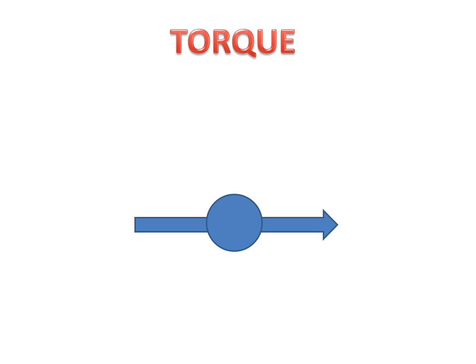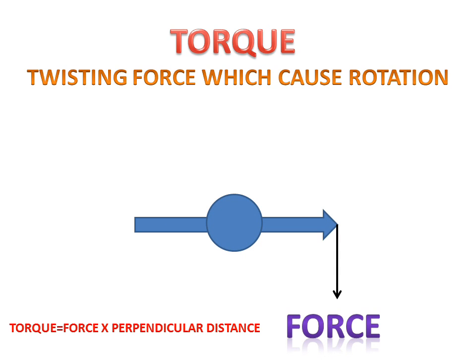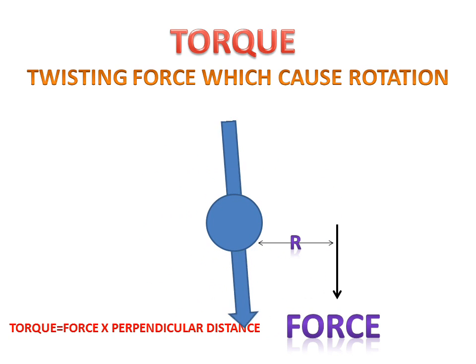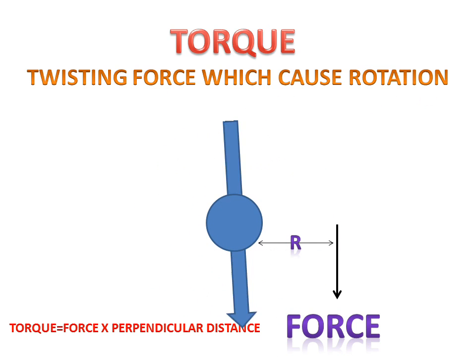For example, this is a reference point and this is an object. When we apply force on the object, it will start rotating. So the twisting force which produces rotation is called Torque.